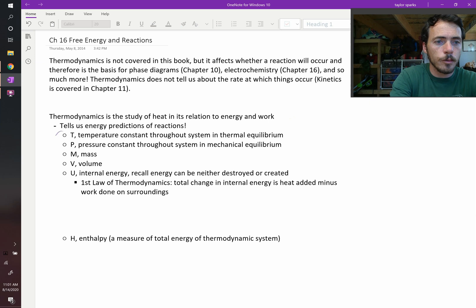Here's the sort of variables that we need to know. We need to know T, that's our temperature. The temperature will be constant throughout a system if it's in thermal equilibrium. Thermal equilibrium means it's the same temperature everywhere. Then we've got pressure, P. And the pressure we're going to say is constant throughout the system under mechanical equilibrium. Then we've got M, our mass, V, our volume, and then U, our internal energy.